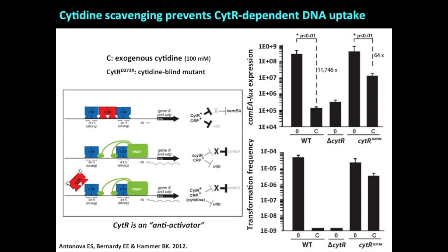In E. coli, when you make this particular amino acid substitution in CytR, you become insensitive to cytidine — there's a conformational change that prevents cytidine binding. You become cytidine blind. Instead of a 10,000-fold drop, when you add cytidine to this mutant, you get about a 50-fold drop. So even though they're smelling little nucleosides, they continue to take up double-stranded DNA. And we see transformation follows the same pattern.